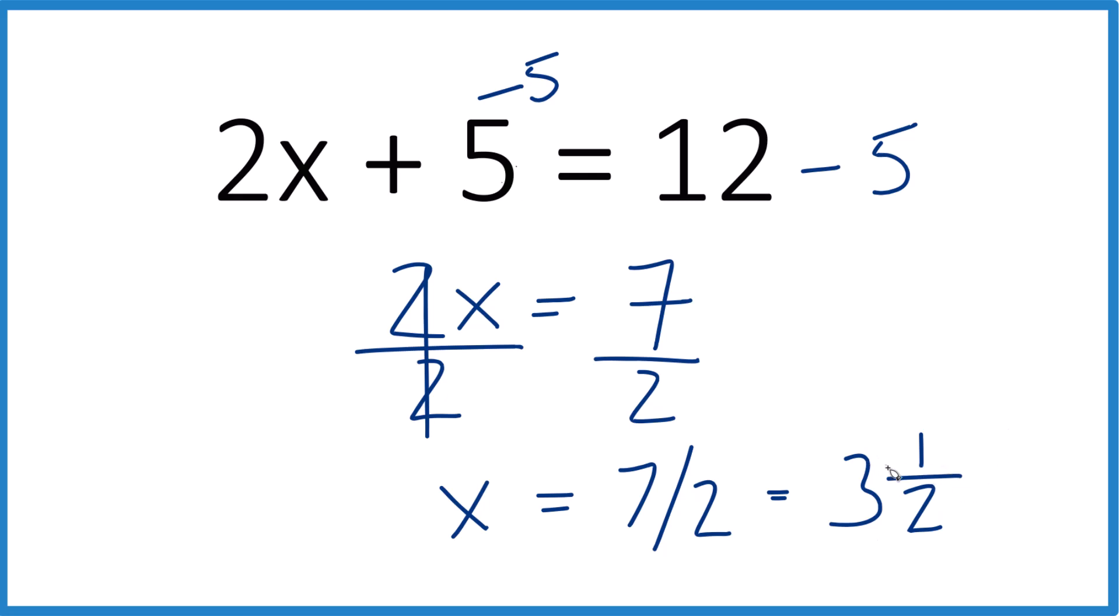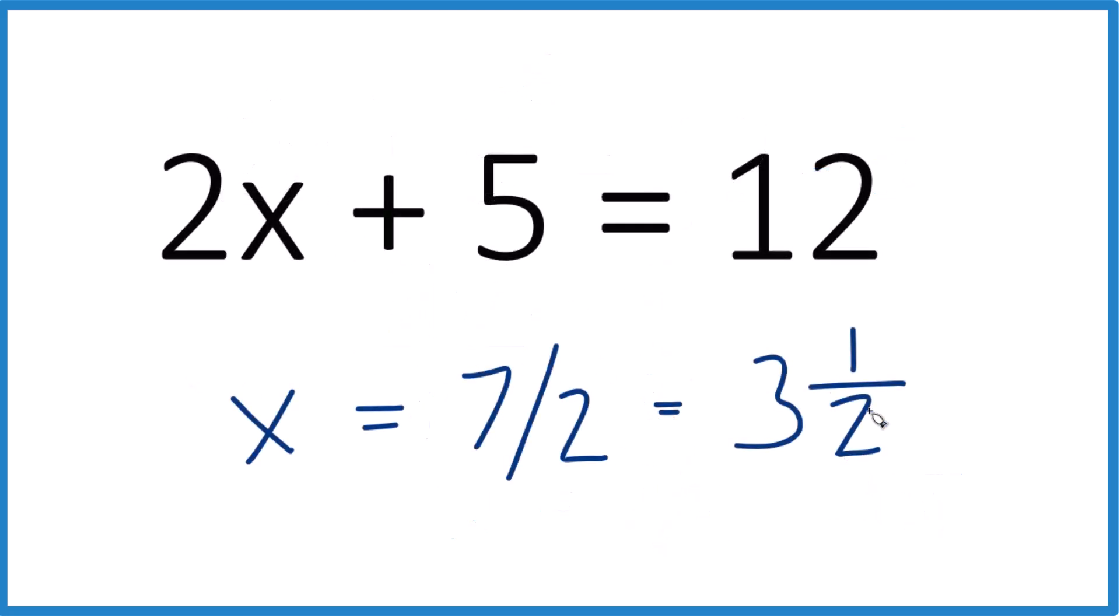And note, we can check that. We can put the number back in here for x. Let's do that. So we said x, let's call it 3 and a half. So 2 times 3 and a half, that's 7. 7 plus 5, that equals 12. And we have 12 over here, so this here is equal to this. It's a true statement. We're right in saying that x equals 7 over 2, or 3 and a half, or 3.5.